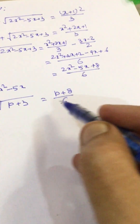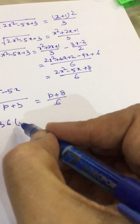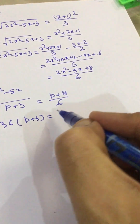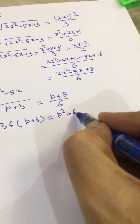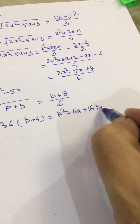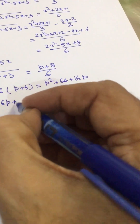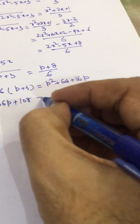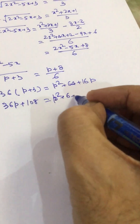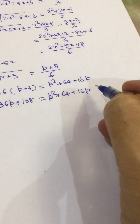Now, squaring both sides, we get 36 equal to p squared plus 64 plus 16p, or 36p plus 108 equal to p squared plus 64 plus 16p.